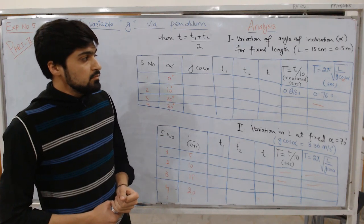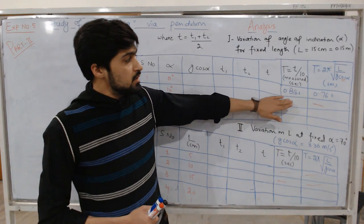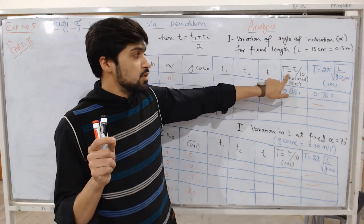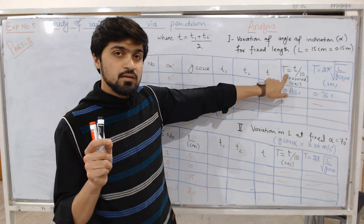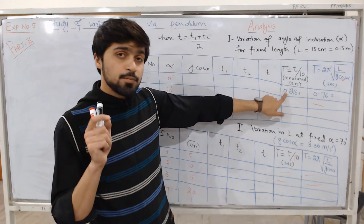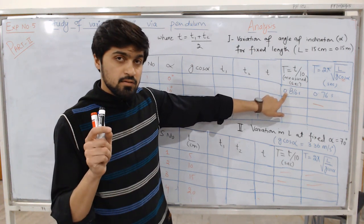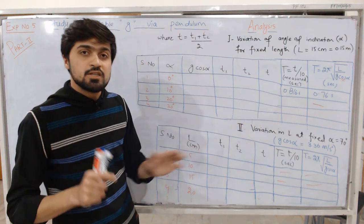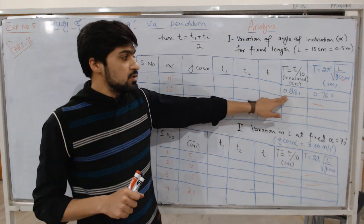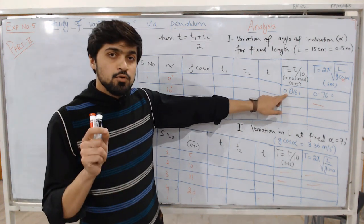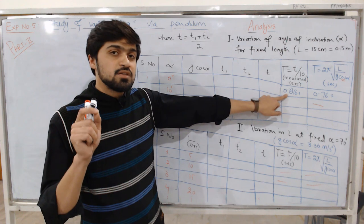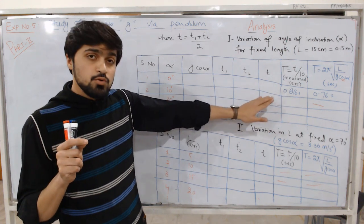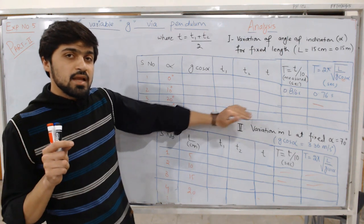That method is accurate, but the problem is that this was actually the time period for a single oscillation. You will note that there is a high probability of error for a single oscillation. That is why we have to repeat this experiment for many trials. For a single oscillation we can take a single value, but that value may not be very accurate and might have some error. In order to reduce the error, what we do is take trials.